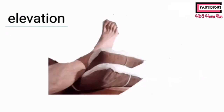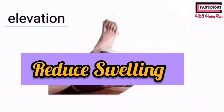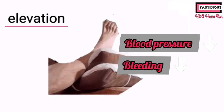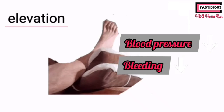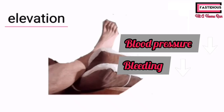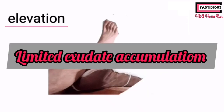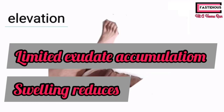The fourth treatment is elevation — lifting the body part above the level of the heart. Elevating the affected part will reduce swelling and bruising. When the affected part is elevated, blood pressure in the injured part reduces and lowers the bleeding. Since exudate accumulation results in inflammation, elevation reduces blood pressure and bleeding, which increases exudate drainage, leading to limited exudate accumulation and reduced swelling.